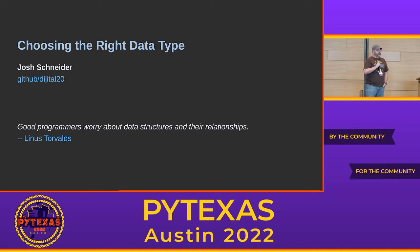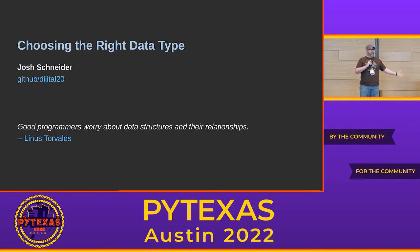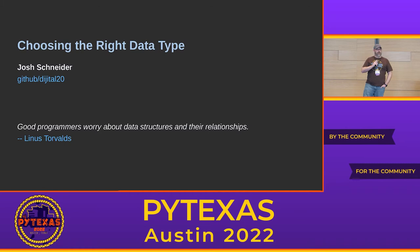I worked my way up starting from customer service and call centers, through being a customer service specialist, technical support and escalations, became a product owner, and now I'm a test automation engineer and senior automation architect. It's fun when you go to career day at school and have to explain what kind of degree you need to do your job. In training people, I've come across a couple of variations of a common question.